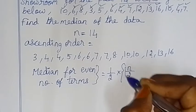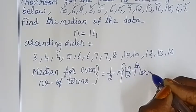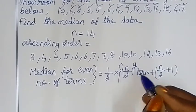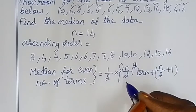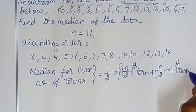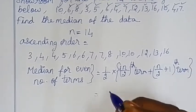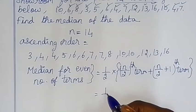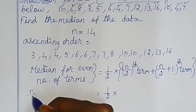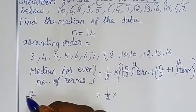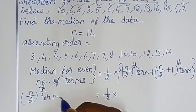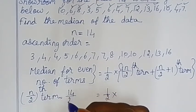The formula: Median = half of (N/2 th term + (N/2 + 1)th term). With N = 14, N/2 = 7th term.